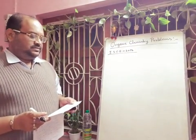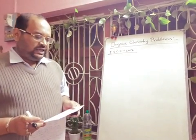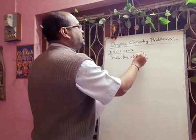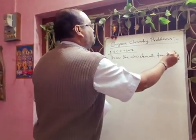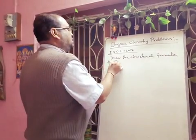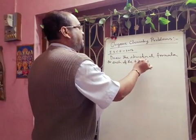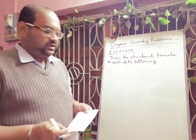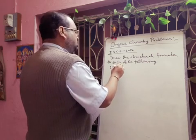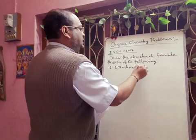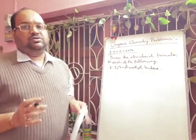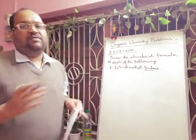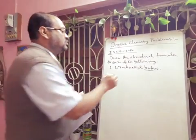The first problem is: draw the structural formula for each of the following. Your first question is 2,3-dimethylbutane. So here, what to do? First we have to draw the structure of the root word butane. Butane means how many carbons? Butane means there are 4 carbon atoms. So you draw the 4 carbon atoms first.